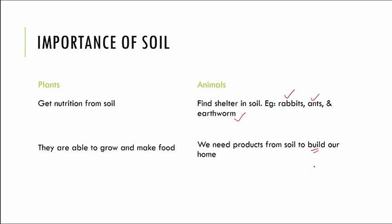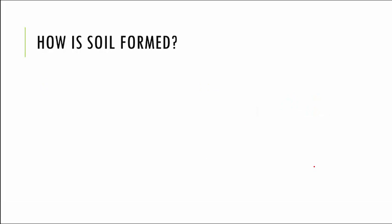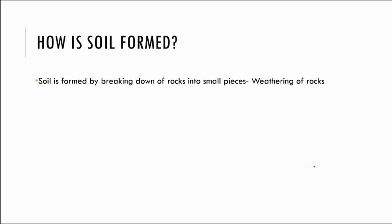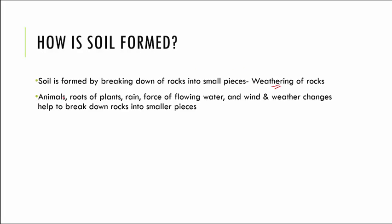Now let us talk about how exactly soil is formed. When rocks break down into smaller pieces, soil is formed. This process is called weathering of rocks. There are various reasons why weathering of rocks can happen: it can happen because of animals, because of roots of plants that go very deep into certain rocks, because of rain, because of the force of flowing water, and because of very harsh winds. Various weather changes can lead to the breakdown of rocks into smaller pieces.